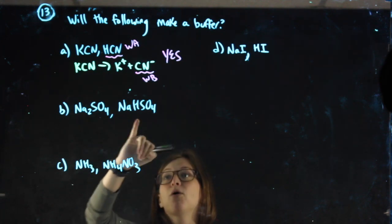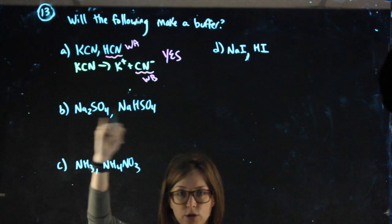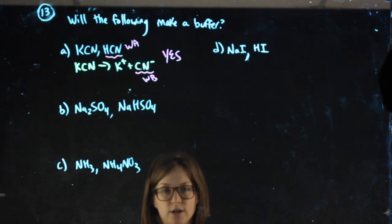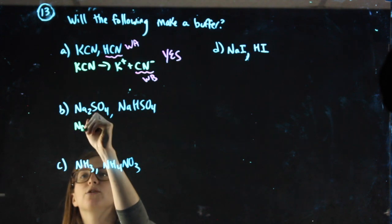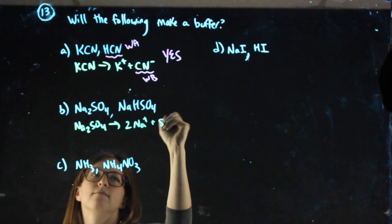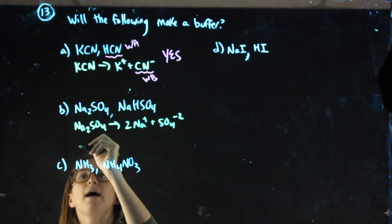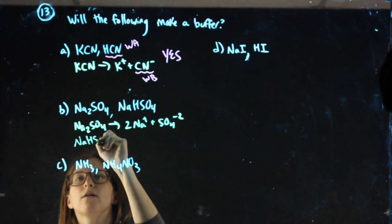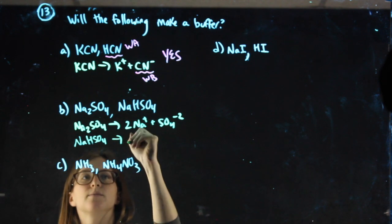When we go here, both of these are salts, so I'll have to dissociate both of them to see if I have that conjugate pair I'm looking for. Na2SO4 will split, and NaHSO4 will split.